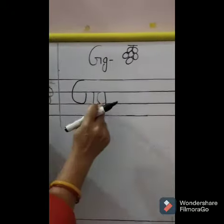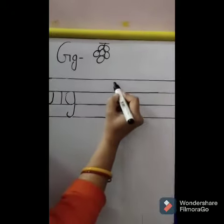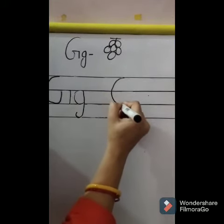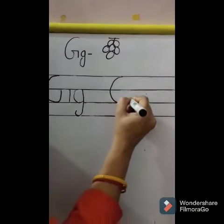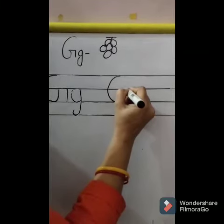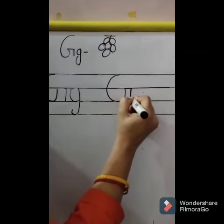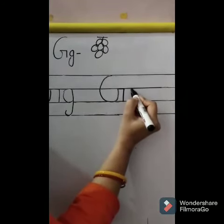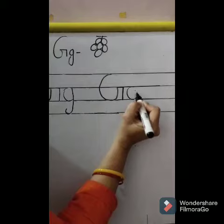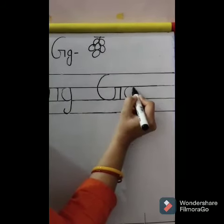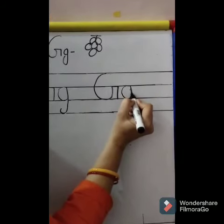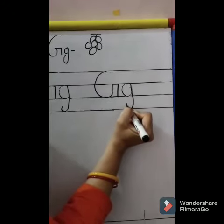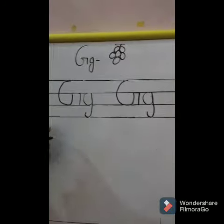Capital G and small G. Again. Curve, isko thodha sa oopar leke jayenge. Small sleeping line. Small standing line. Capital G. Small G — small curve middle line me. Isko bhi aise oopar leke jayenge. Tho small leese aise ka ban jayega. Phir, standing line, thoada sa curve niche se. Capital G. Small G.